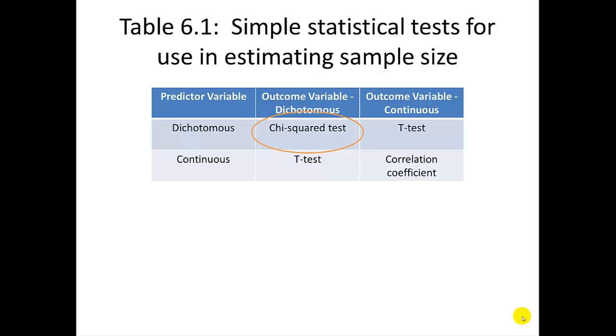In your text, Table 6.1 tells you that the chi-square test is the appropriate simple statistical test to use to estimate sample size when you have both dichotomous predictor and outcome variables.